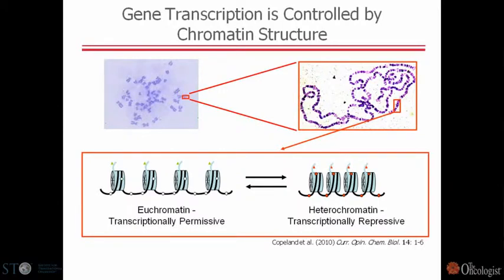We can view this as a two-state model—more complicated than that, but for our purposes today—chromatin existing in either a transcriptionally repressive conformation or a more open, less condensed, transcriptionally permissive conformation. What determines that conformational transition is the level of methylation of the DNA itself, but very importantly, levels of post-translational modifications of the histone proteins around which the chromosomal DNA is wound.